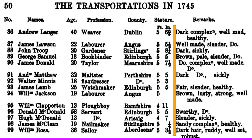You can see diversity not just in how they look but in the resources they brought in terms of their professions. Even though these individuals were enslaved, they brought with them significant skills: weavers, gardeners, bookbinders, flax dressers, and watchmakers. They are described as dark complexion, well-made — and in one case, John Troop is identified as dark and sickly. Again, you see this variety in the individuals who came over.